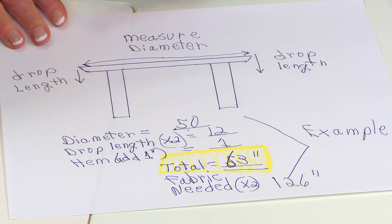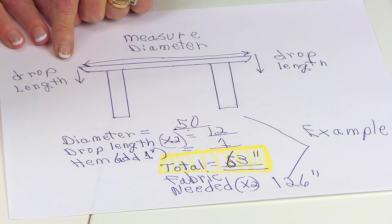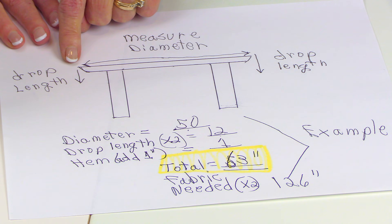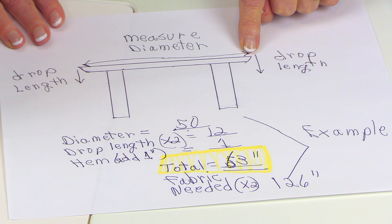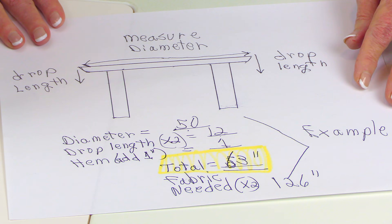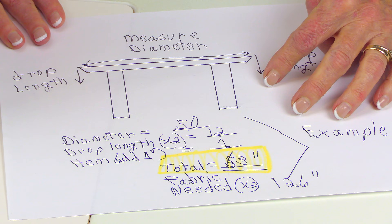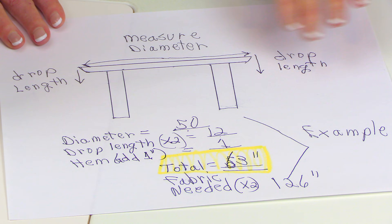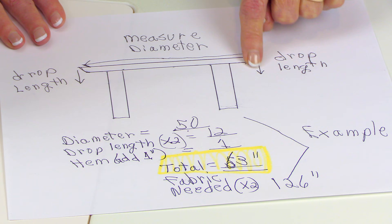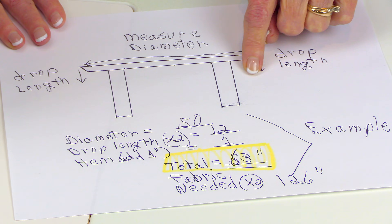Before you head to the fabric store to get the fabric, you need to measure your table. You want to measure the diameter — that means measure from one edge all the way to the other side. Then you want to measure the drop length — in other words, how far down you want the tablecloth to hang. Then you need to add all of these numbers together.